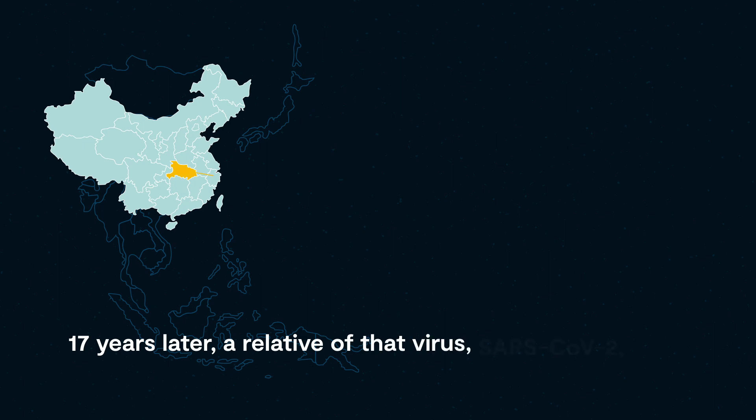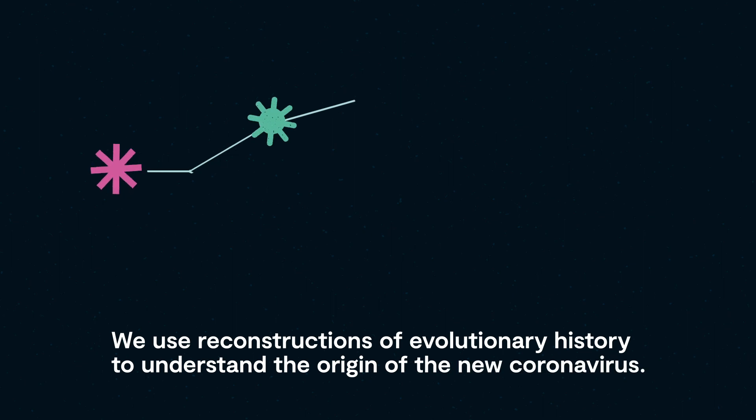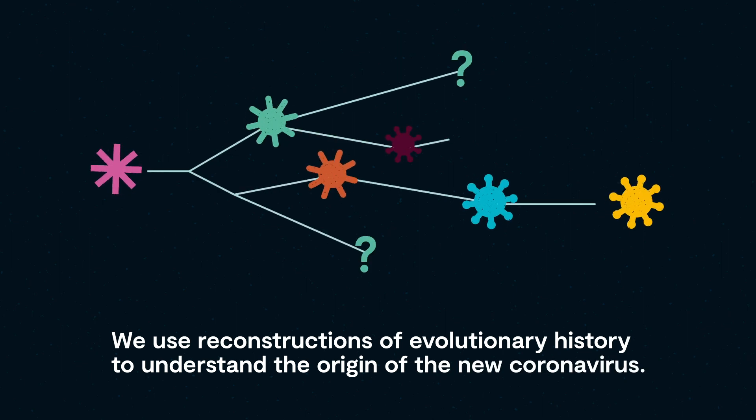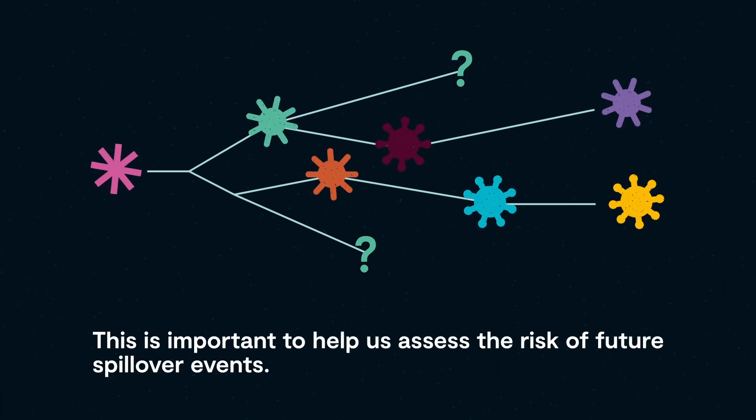17 years later, a relative of that virus, SARS-CoV-2, has crossed to humans, resulting in the COVID-19 pandemic. We use reconstructions of evolutionary history to understand the origin of the new coronavirus. This is important to help us assess the risk of future spillover events.